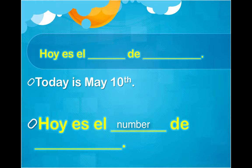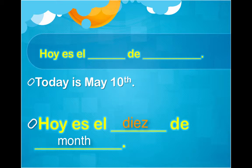Diez is 10, so I'm going to write 'diez' right in the blank. So right now I have 'hoy es el diez de,' and then the last blank is for the month. May is: enero, febrero, marzo, abril, mayo. Mayo is May, so I'm going to write 'mayo' in the last blank. The answer is: hoy es el diez de mayo.